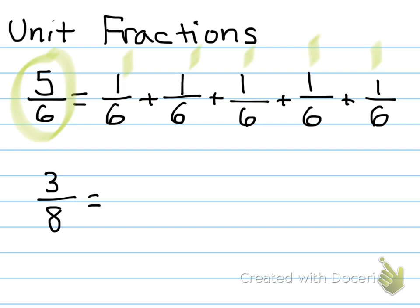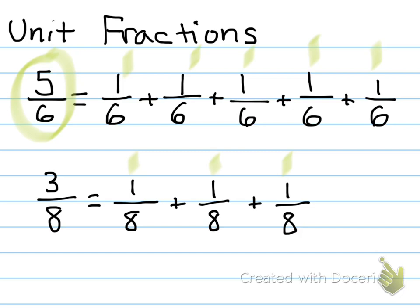Let's look at 3/8. The unit fraction — 1 is always the numerator. What does one piece represent? 1/8. You would have to add that 3 times to get 3/8: 1, 2, 3. So here are my unit fractions: 1/8 plus 1/8 plus 1/8 equals 3/8.